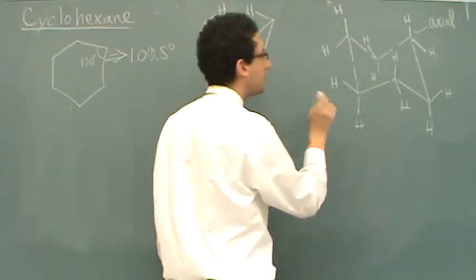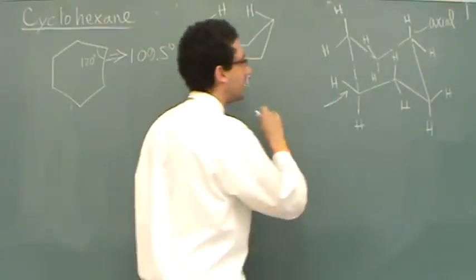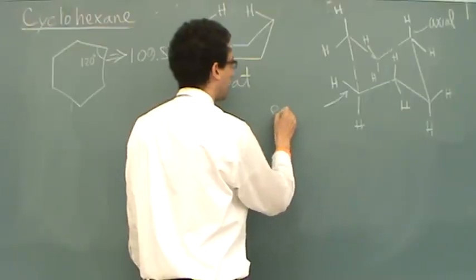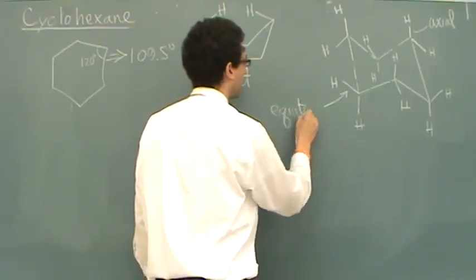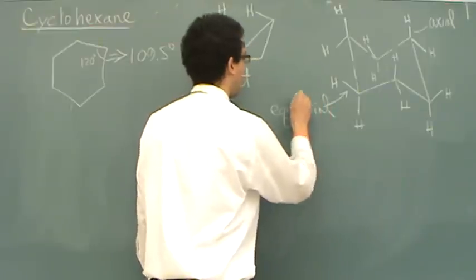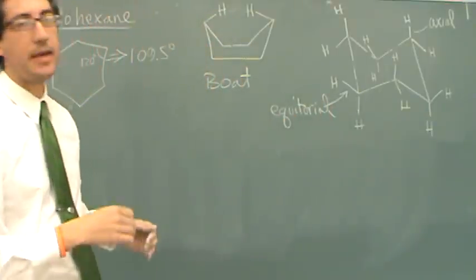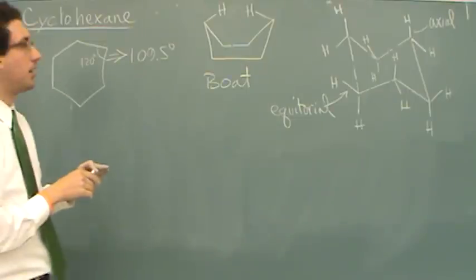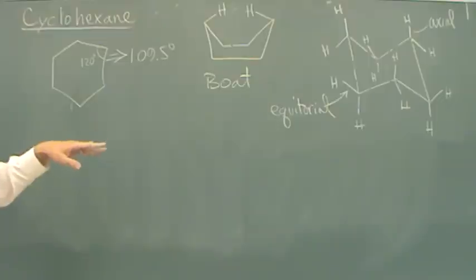And all the non-vertical lines, they're kind of at a slant, at an angle a little bit. These are called equatorial. Equatorial positions. The equatorial position is sterically favored. That means it is the most free and most away from everything else when you're at the equatorial position.